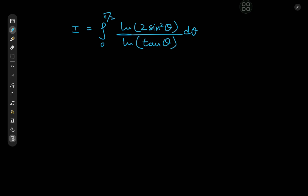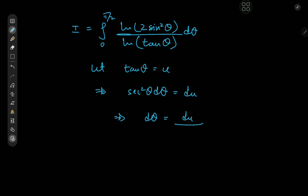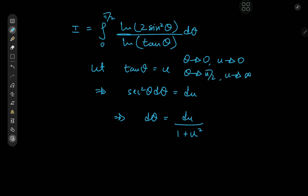To begin, we'll make the substitution letting tan θ = u, which implies that sec²θ dθ = du. This also implies that dθ = du / sec²θ, and sec²θ is just 1 + tan²θ. Since tan θ = u, we have 1 + u² in the denominator. As for the limits: as θ → 0, u → 0, and as θ → π/2, u → ∞.